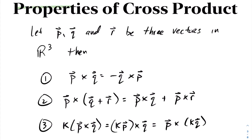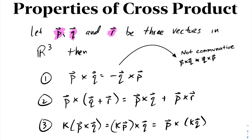We also have properties of the cross product. Given three vectors p, q, and r in R3, we have the following three properties. First, p cross q equals negative q cross p — so cross product is not a commutative operation like dot product. Second, we have distribution of the cross product, similar to dot product. And lastly, scalar multiplication can be passed to either vector p or vector q, or applied at the end of the operation.